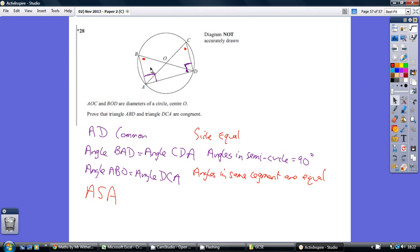We're looking at triangles ABD and ACD, and we've got to prove that they're congruent. AD is obviously a common side - it's a base for both of them. The angles BAD and CDA are both 90 degrees because they're angles in a semicircle equaling 90 degrees. We know that because we're told that BOD and AOC are diameters.